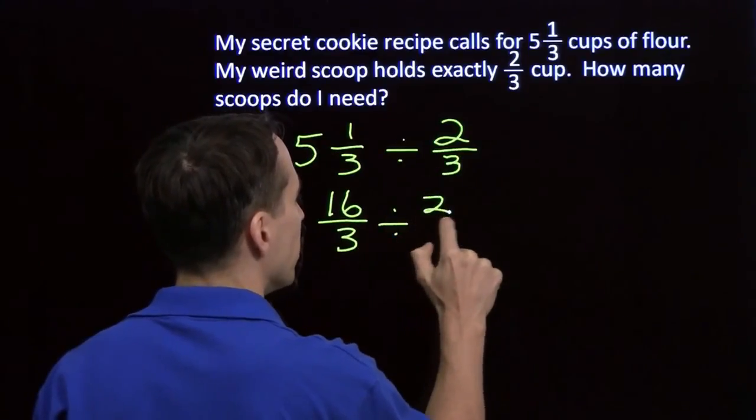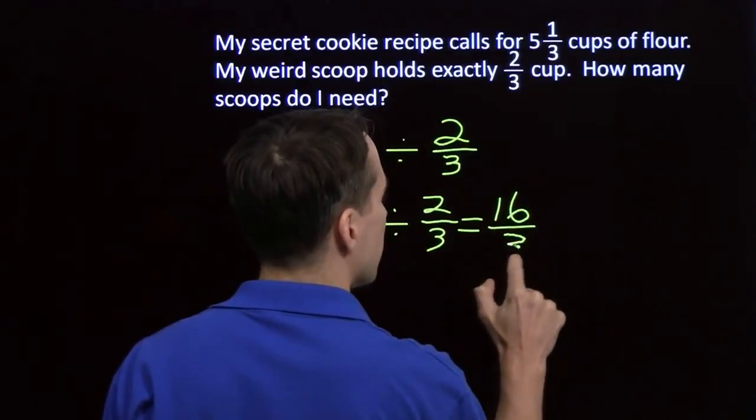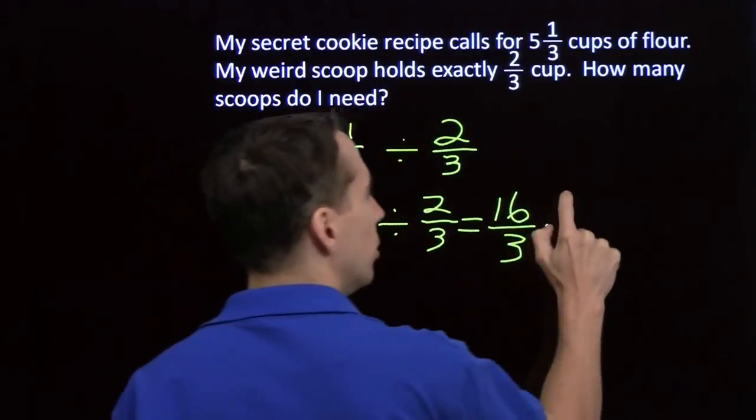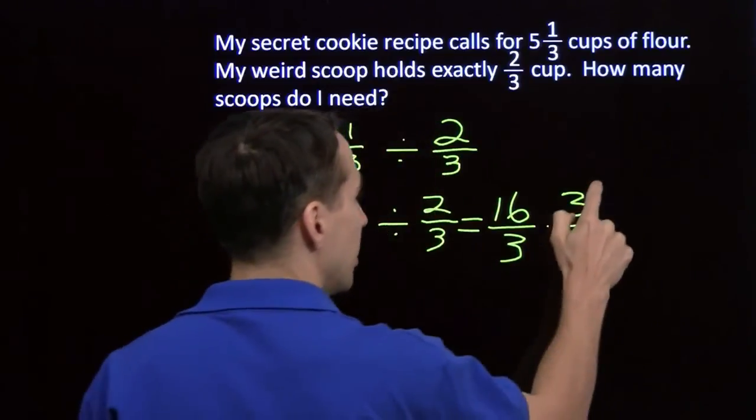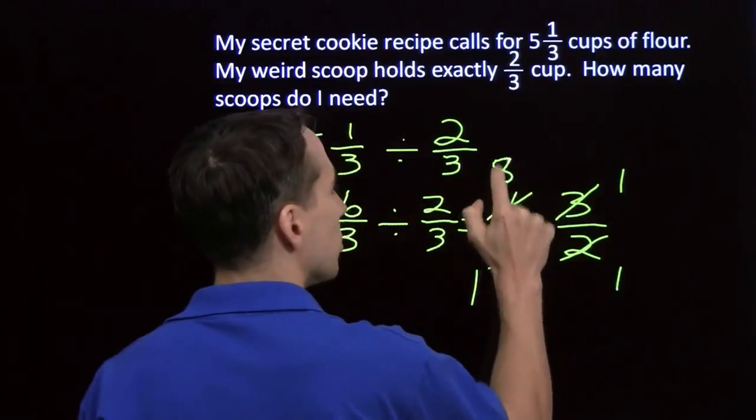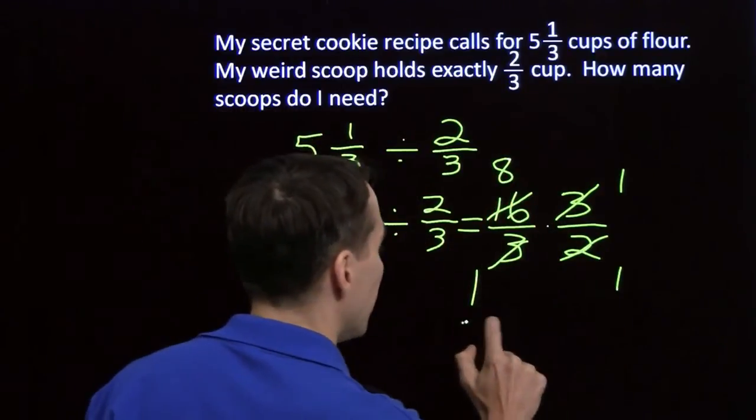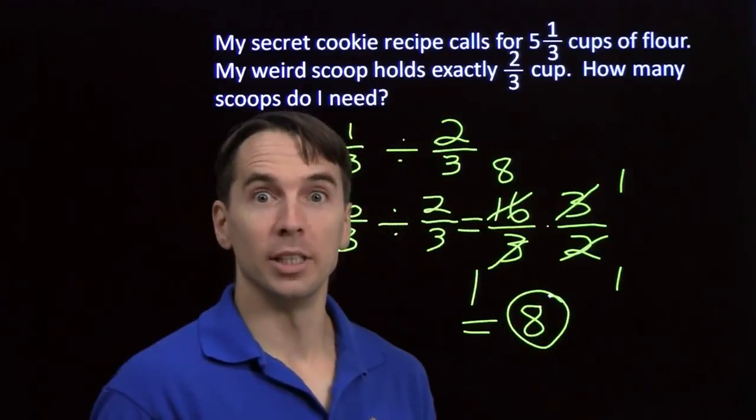Divided by ⅔. And we know how to divide fractions. This is 16/3 times the reciprocal of ⅔, which is 3/2. Now we can do our cancellation. The 3s cancel. The common factor of 2 cancels. And all we're left with is 8 scoops. And I'm going to go make some cookies.